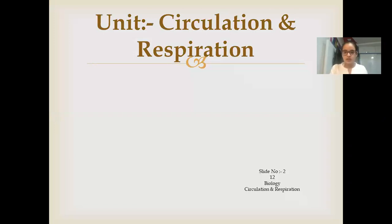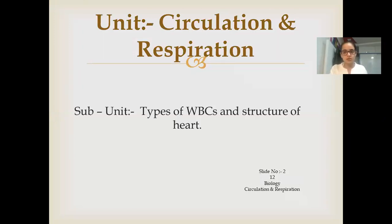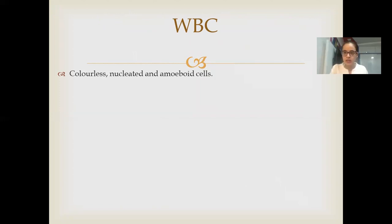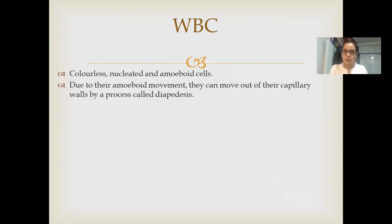Our unit today is circulation and respiration. The subunit is types of WBCs and the structure of the heart. WBCs are colorless, nucleated, and amoeboid cells — amoeboid means having no regular shape. Due to their amoeboid movement, they can move out of capillary walls by a process called diapedesis, to destroy germs or viruses that enter our body. They are our soldiers.